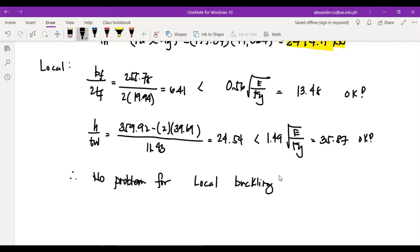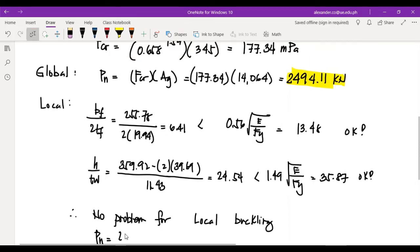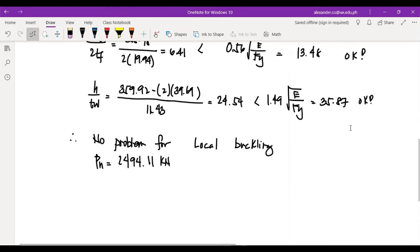Sir, what if it exceeds? Well, just like I've said, it won't exceed. But okay, I'll show you. Now, before that, when it doesn't exceed, they remain the same. The P sub N will be the same for global, which is equal to 2,494.11. Okay. So the same capacity because you have no problem with local buckling. So, that's still the nominal actual force.